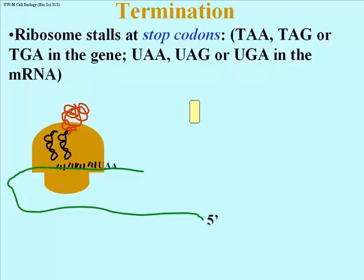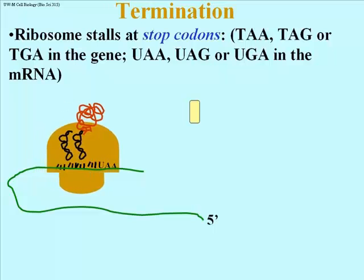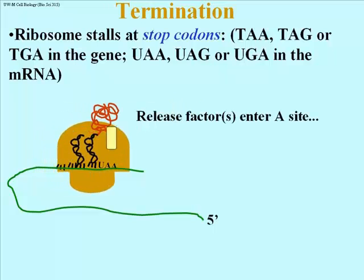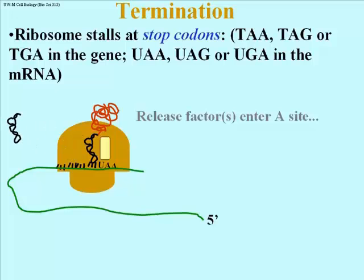The ribosome, when it moves over that stop codon, will actually stall. It's been demonstrated that a ribosome moving at a healthy clip along a messenger RNA actually stalls for a brief period when it hits the UAA, simply because there is no tRNA with an amino acid that can recognize it.